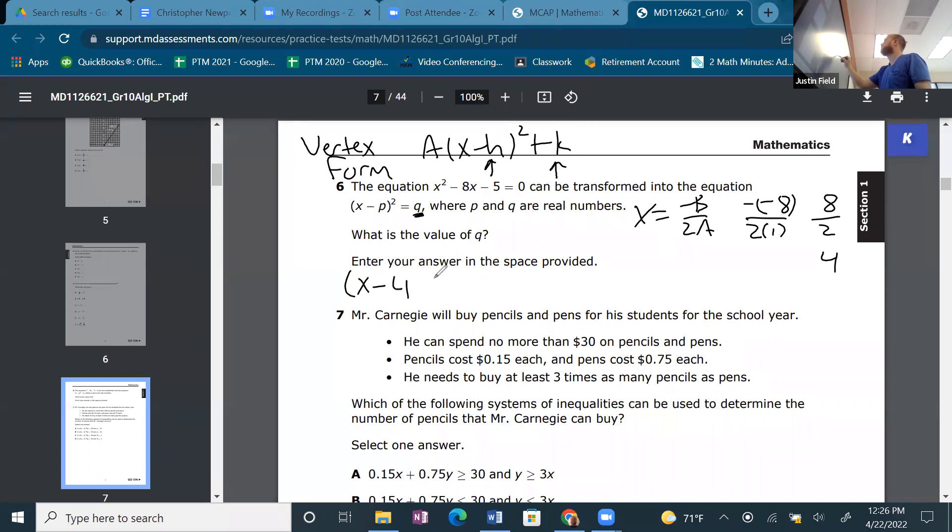And now to find q, all we got to do is substitute the 4 into our equation. So 4² - 8(4) - 5, 16 - 32 - 5, -16 - 5 is -21. So we're going to put positive 21. The answer is 21. Circle in the 2 and the 1 on your answer sheet.